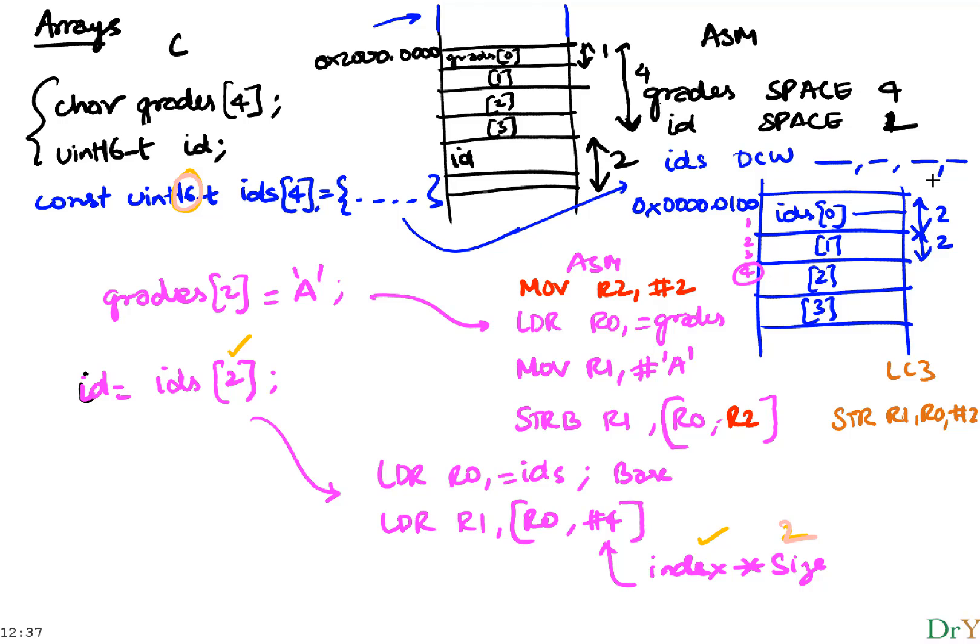Oh, by the way, did I make any mistakes here? Is this a valid one? I didn't finish this. Is this an LDR? It should be LDRH, right? I thought you guys would catch me. That's LDRH because that's a uint16. Ids are uint16. So, I have to say LDRH.